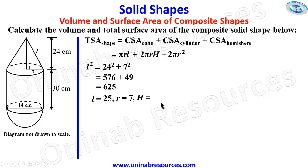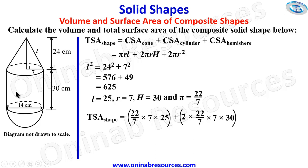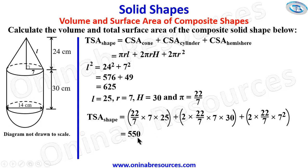With R = 7 cm, L = 25 cm, H = 30 cm, and π = 22/7, the total surface area is: (22/7) × 7 × 25 for the cone's curved surface area, plus 2 × (22/7) × 7 × 30 for the cylinder's curved surface area, plus 2 × (22/7) × 7² for the hemisphere's curved surface area.